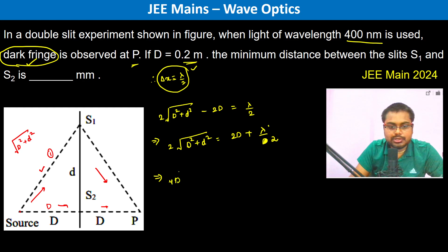It's going to be 4D square plus d square is equal to 4D square plus lambda square by 4 plus 2 times 2D into lambda by 2. Now 4D square and 4D square is gone.